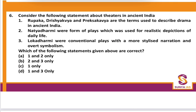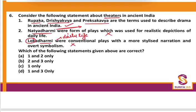Consider the following statements about theatres in ancient India. Theatre means Natak. Terms like Rupa, Drishya Kavya, and Preksha Kavya are used to describe drama. We discussed two types: Nate Dharmi and Lok Dharmi. Lok Dharmi was the Natak displaying daily lifestyle, while Nate Dharmi was the narrative style given patronage by the court. The statements have these two interchanged, so only option 1 is correct.